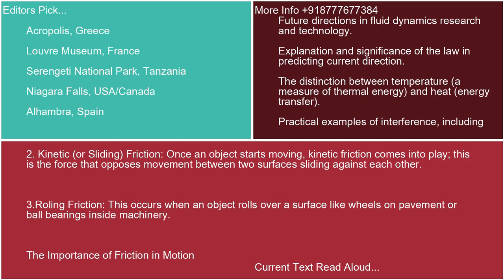Two: kinetic or sliding friction. Once an object starts moving, kinetic friction comes into play. This is the force that opposes movement between two surfaces sliding against each other. Three: rolling friction. This occurs when an object rolls over a surface, like wheels on pavement or ball bearings inside machinery.